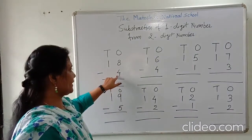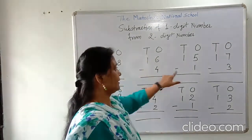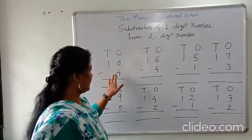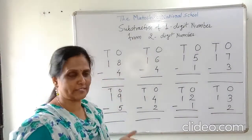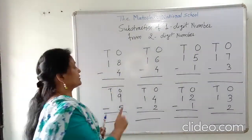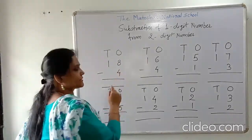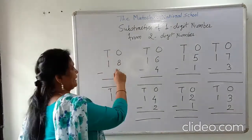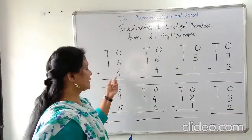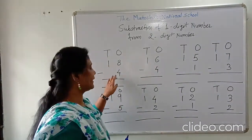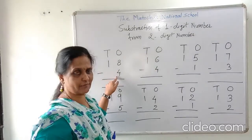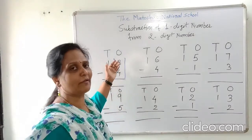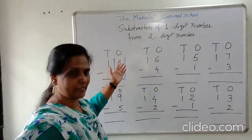So first you can see here, this is a single digit number I write. This single digit number we have to write in ones place. So this four — this single digit number I write in ones place. So this is 18: I write one in tens place and eight in ones place. The single digit number we have to write under the eight in ones place. So now first we have to subtract four from eight.